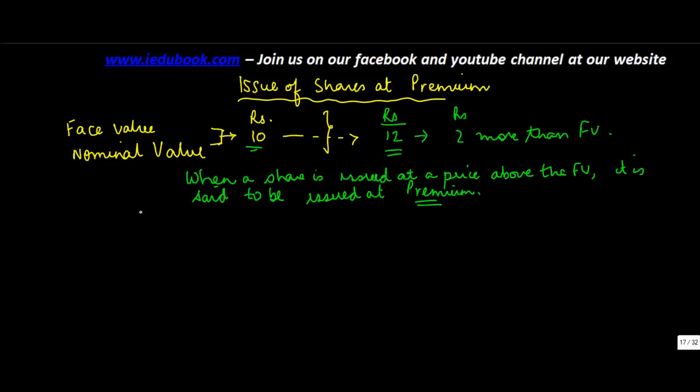And the excess of the issue price, in this case this Rs. 12 is going to be called as the issue price. So premium is equal to issue price minus the face value. So in the above example 12 minus 10 is equal to Rs. 2.